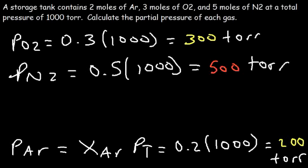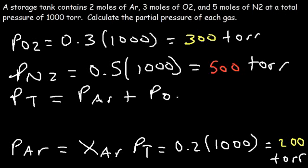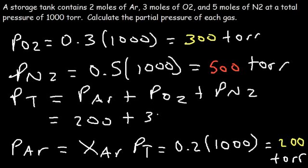According to Dalton's law of partial pressure, the total pressure is the sum of the individual partial pressures. Adding 200 plus 300 plus 500 gives a total pressure of 1000 torr, which confirms our answer.